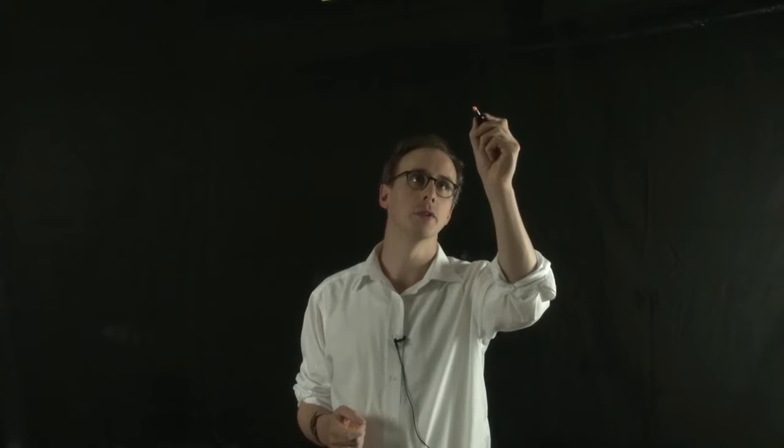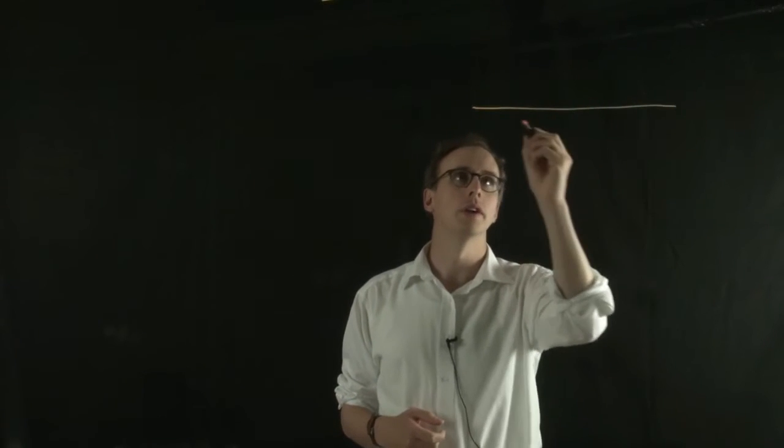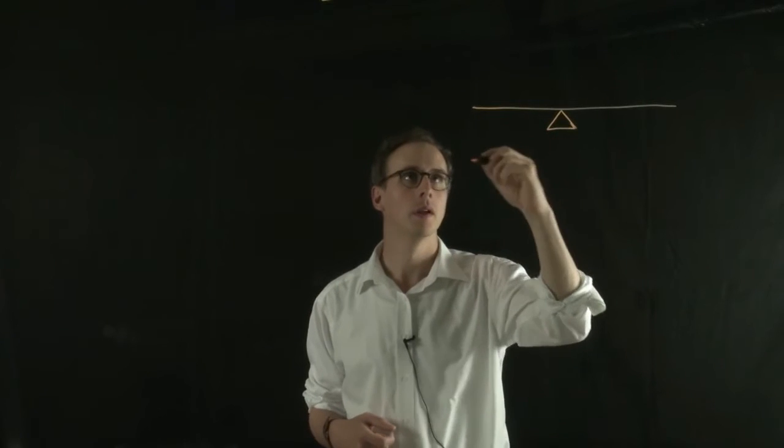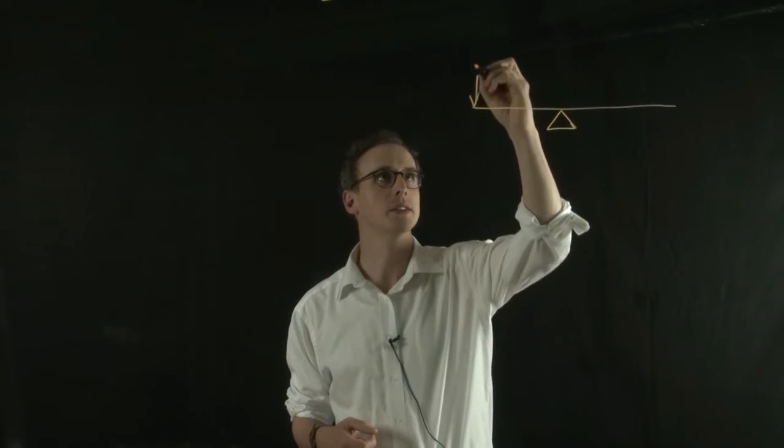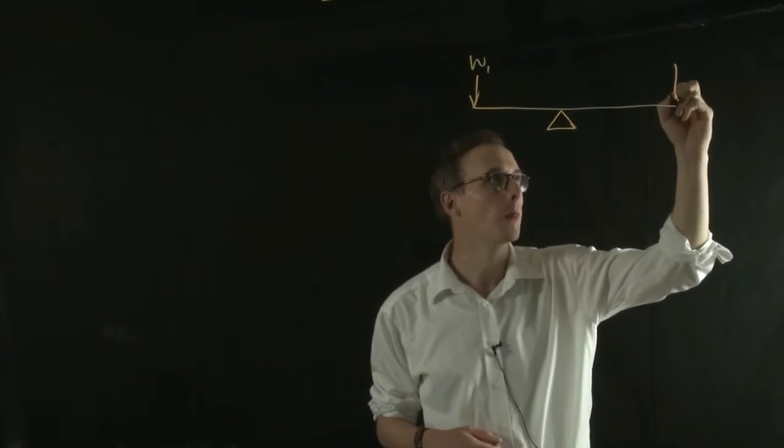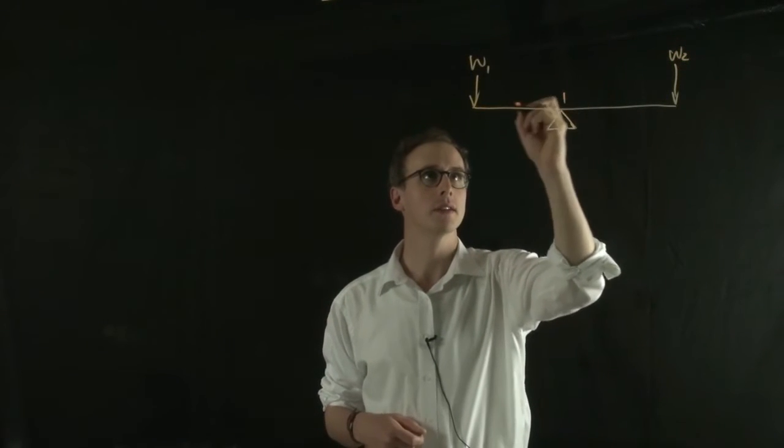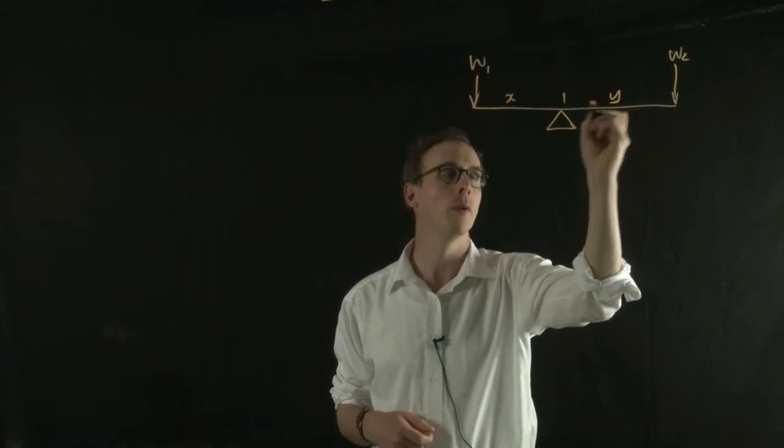If you have something like a seesaw, where you have a beam and a pivot in the middle, and you have two weights, weight 1 and weight 2, at distances x and y away from the pivot.